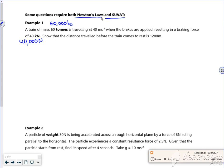Show that the distance traveled before the train comes to rest is 1,200 meters. So let's just draw a picture first. Here's my train trundling along at 60,000 kg. Now it's put the brakes on, so there is no driving force. It's still going forwards but it's just slowing down.